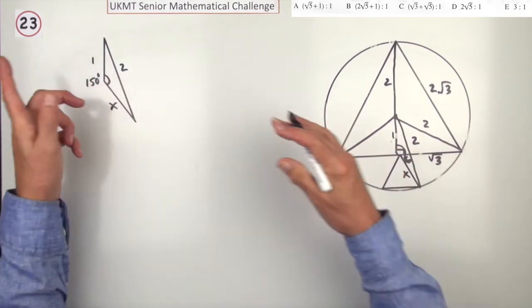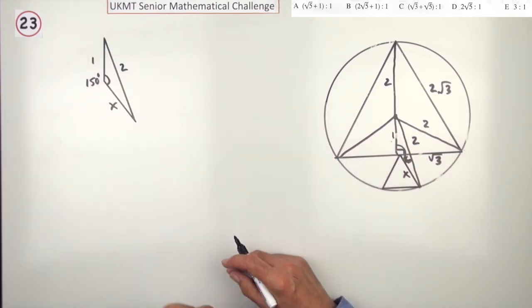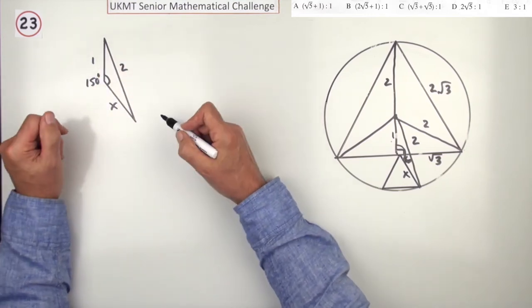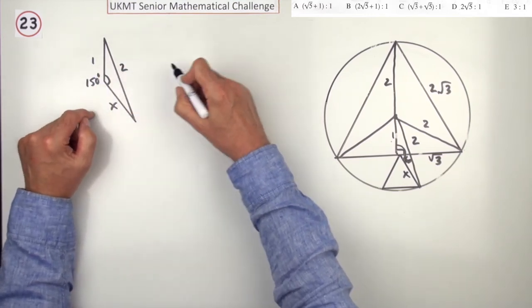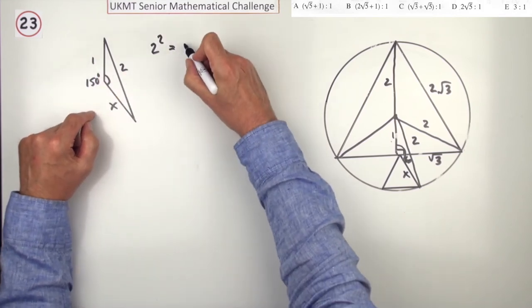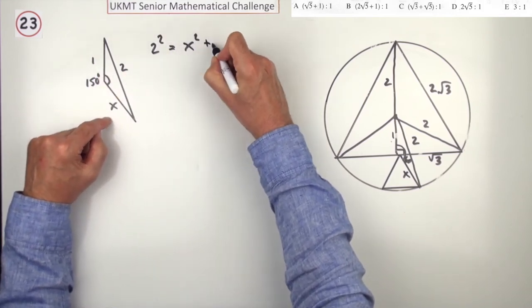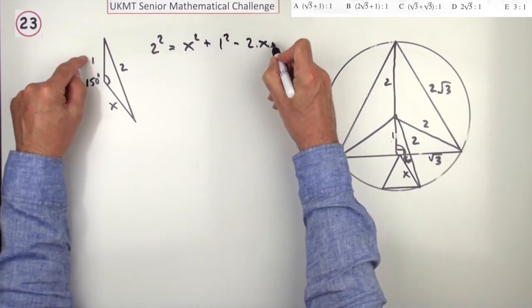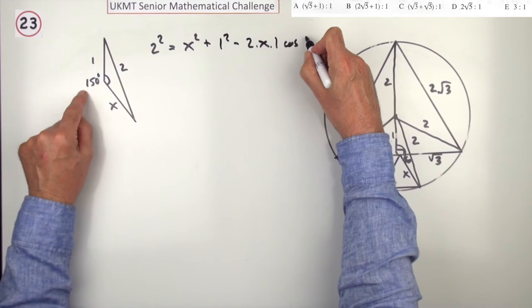So I'll take this triangle here and figure out what x is. Well, as soon as you draw that, that's a cosine rule, isn't it? So I'll just write that out. 2 squared—side opposite the angle—will be, I'll take this one first, x squared plus 1 squared minus 2 times x times 1 times the cosine of 150.